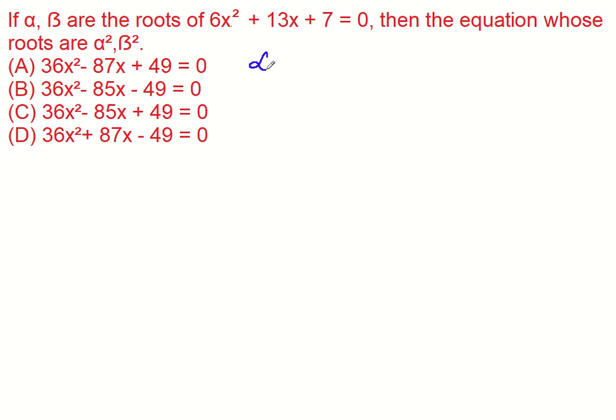Here alpha plus beta is equal to minus b by a, that is minus 13 by 6. Alpha beta is equal to c by a, that is 7 by 6.